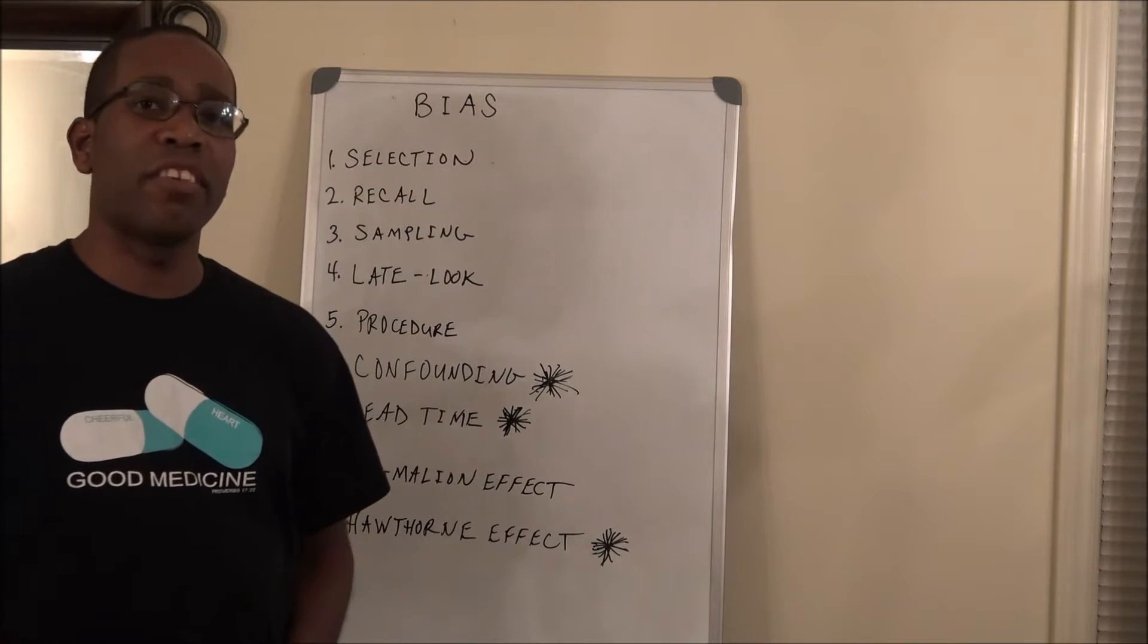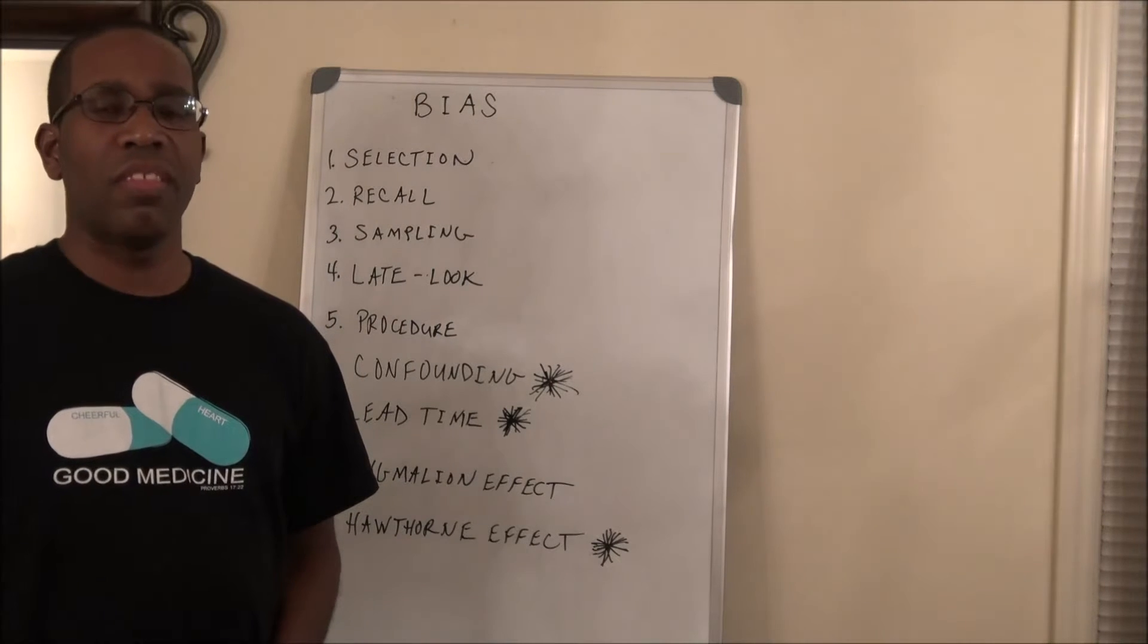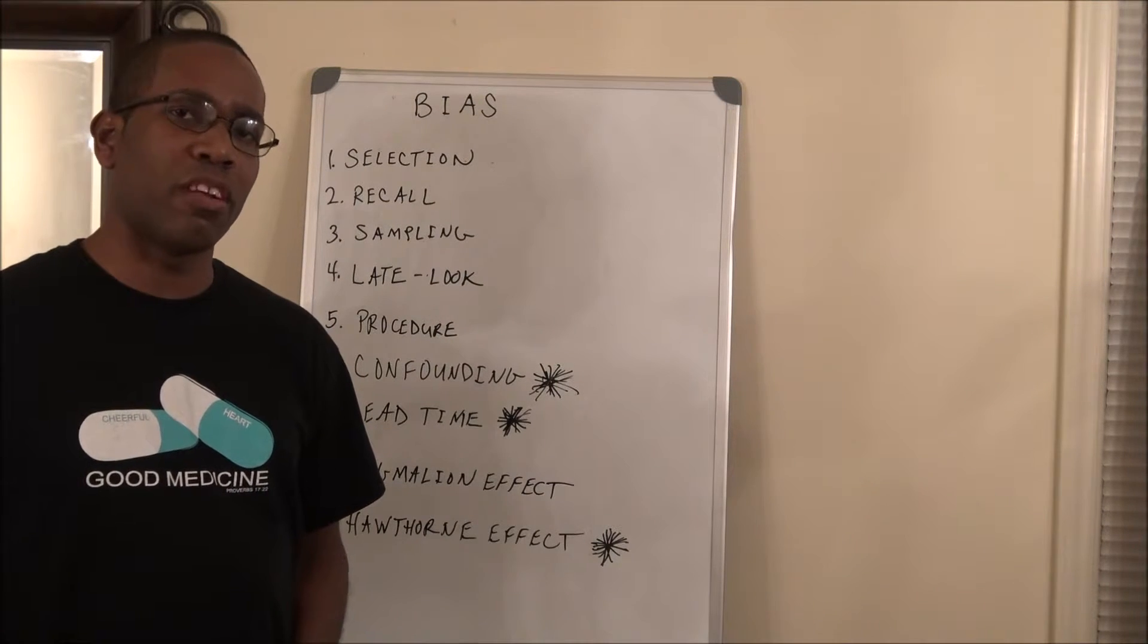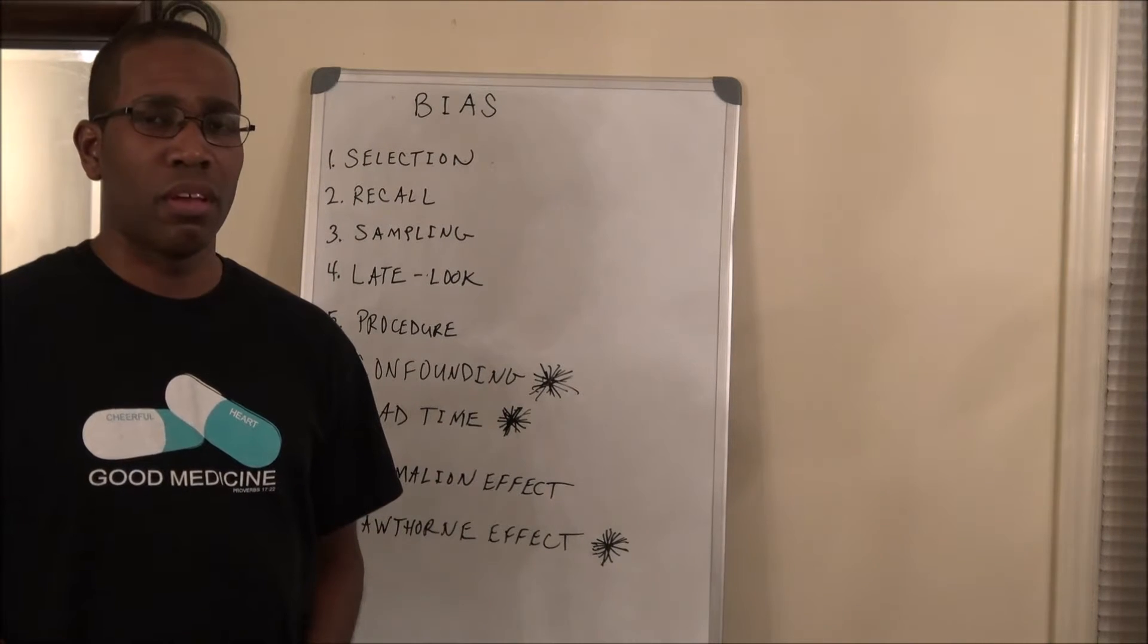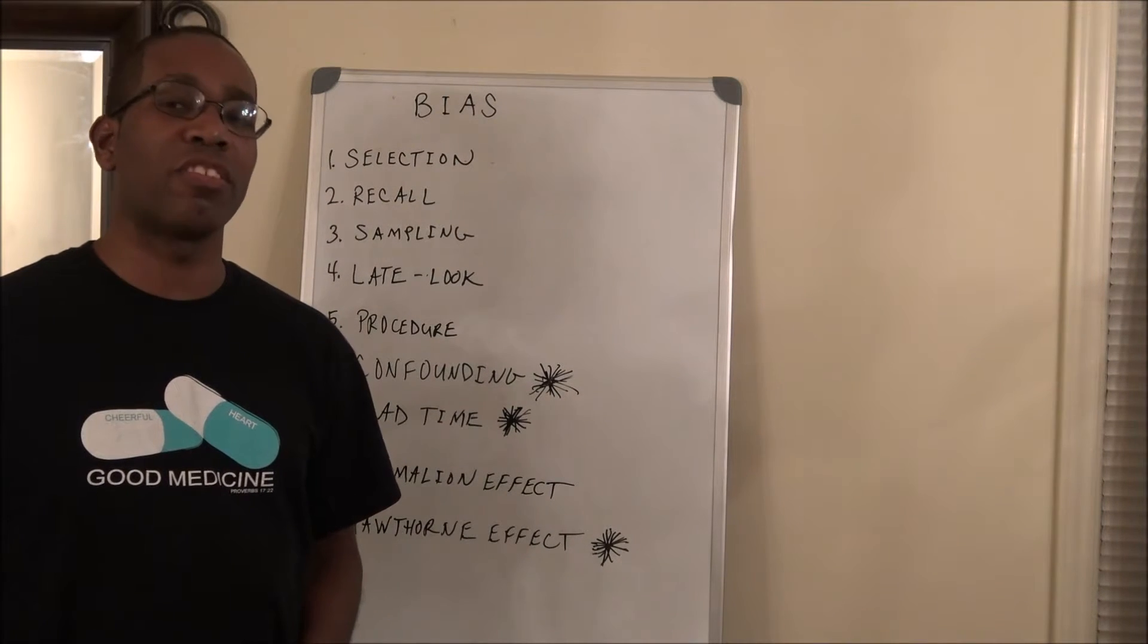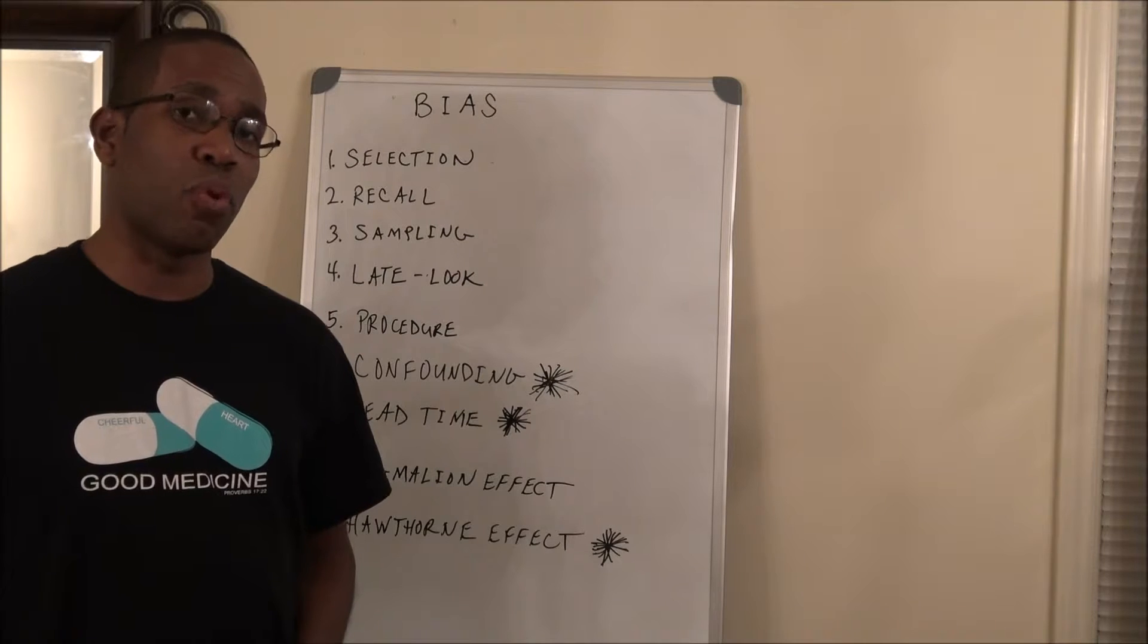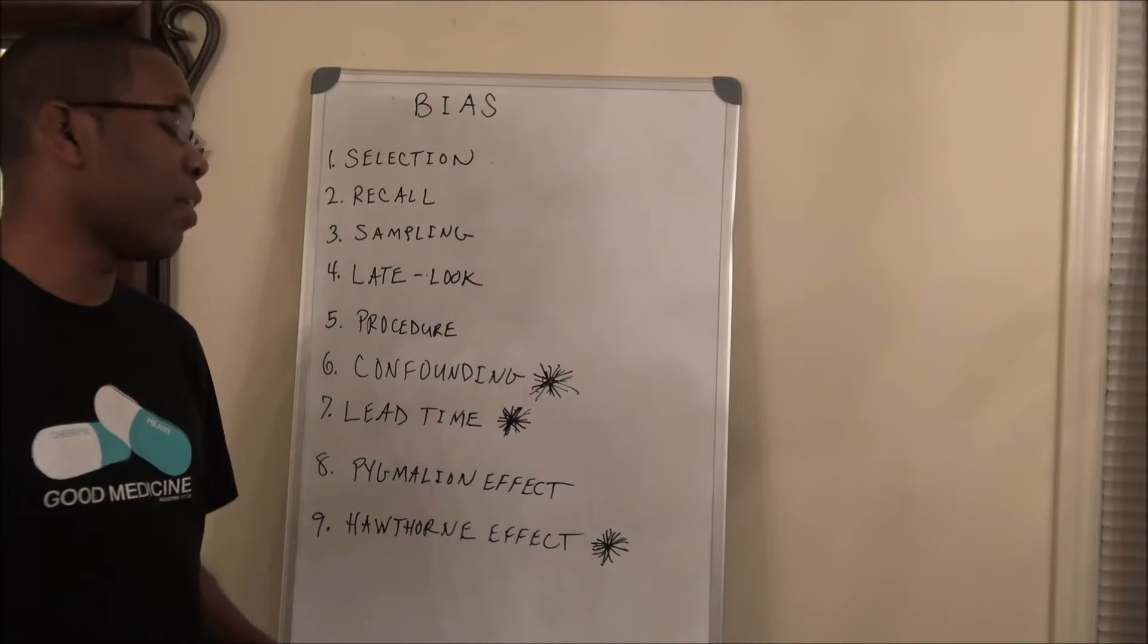Number five is procedure bias. This occurs when subjects in a particular group are not treated the same. For example, when you have subjects in a treatment group that are given more attention, that can result in procedure bias.